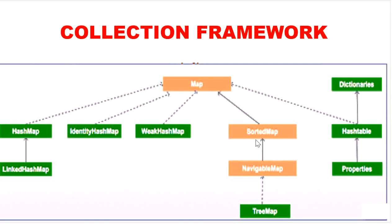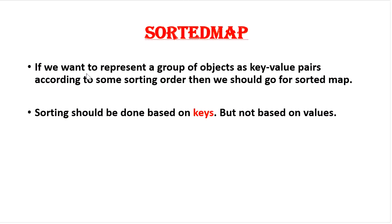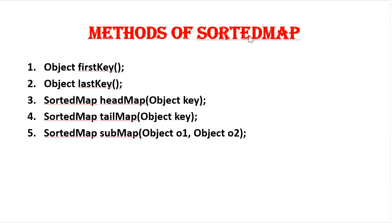The next one is the SortedMap interface. If we want to represent a group of objects as key-value pairs according to some sorting order, then we should go for SortedMap. Sorting is done based on keys, not on values. The methods are: firstKey() to get the first key, lastKey() to get the last key, headMap(), tailMap(), and subMap() - similar functionality as in SortedSet.